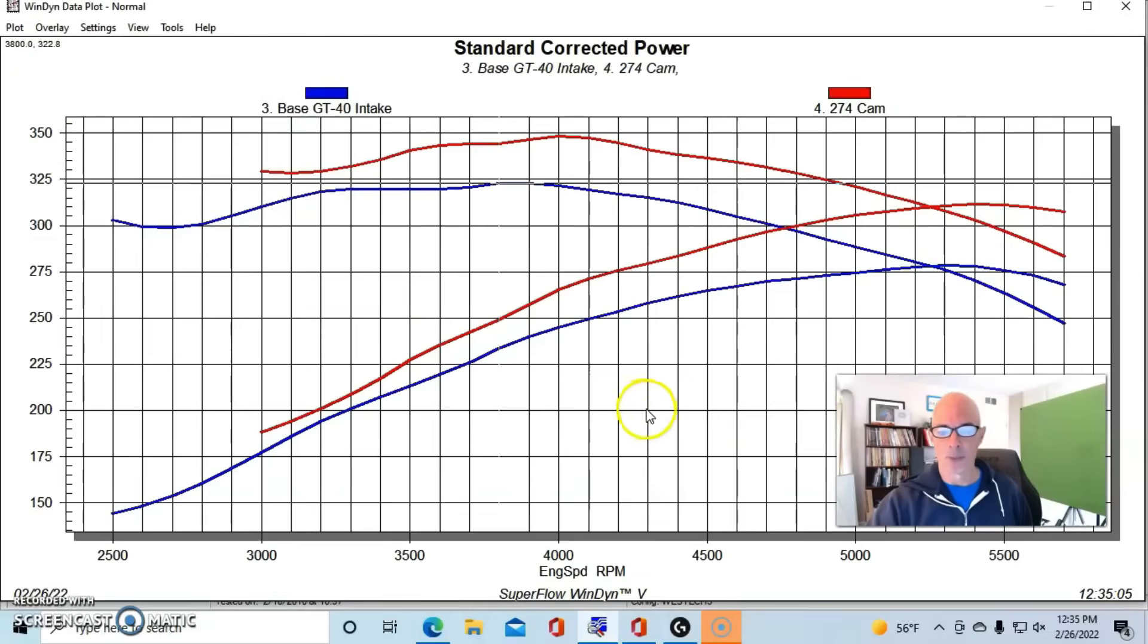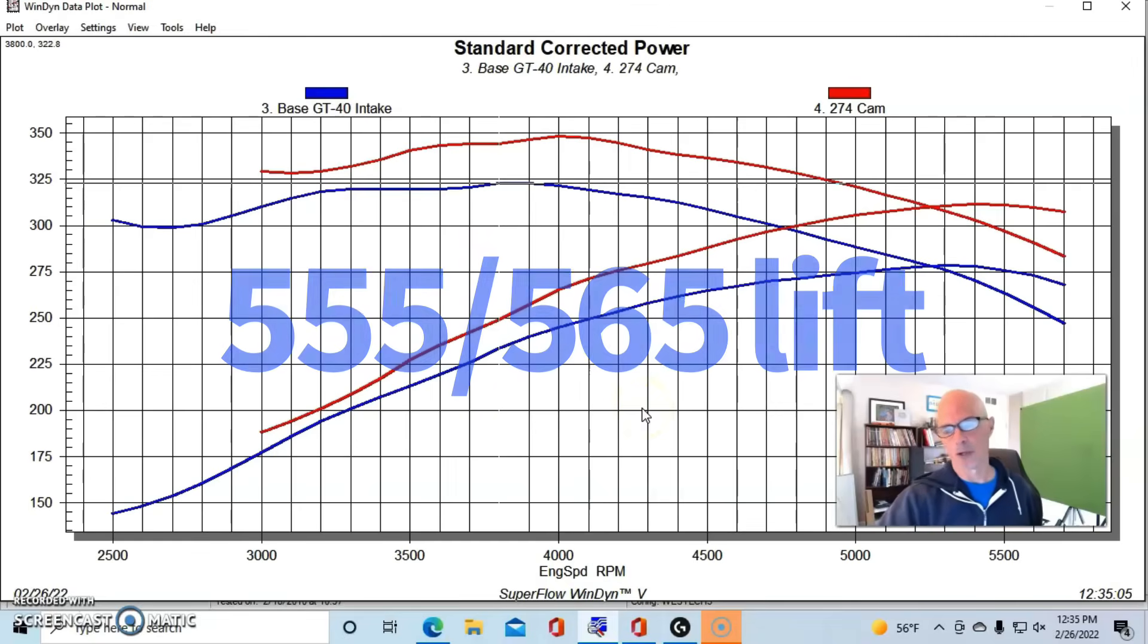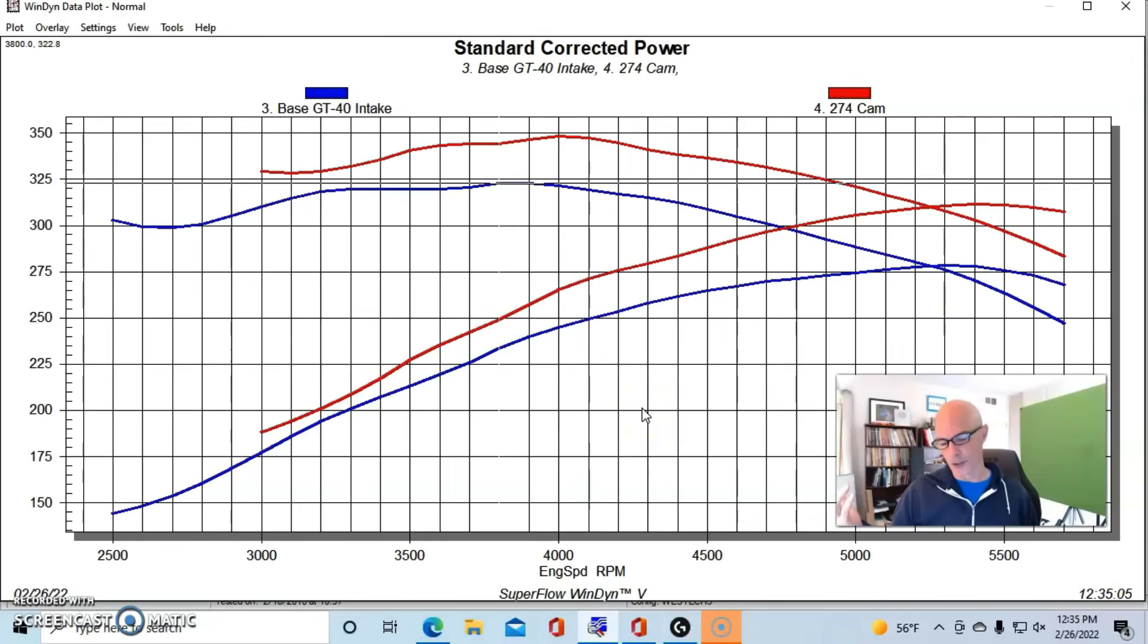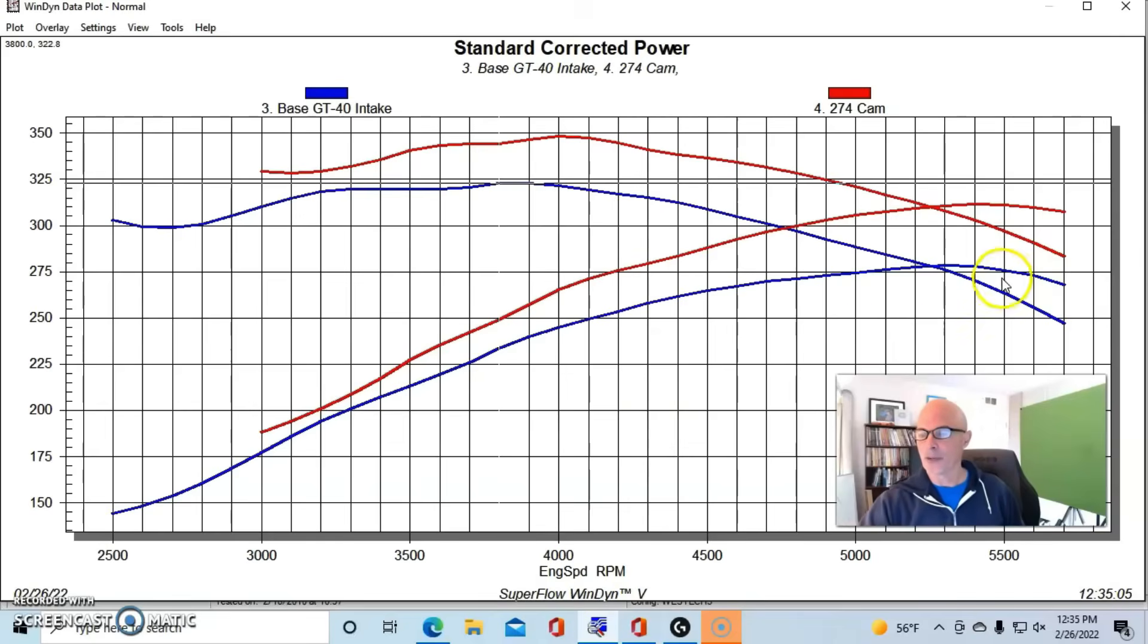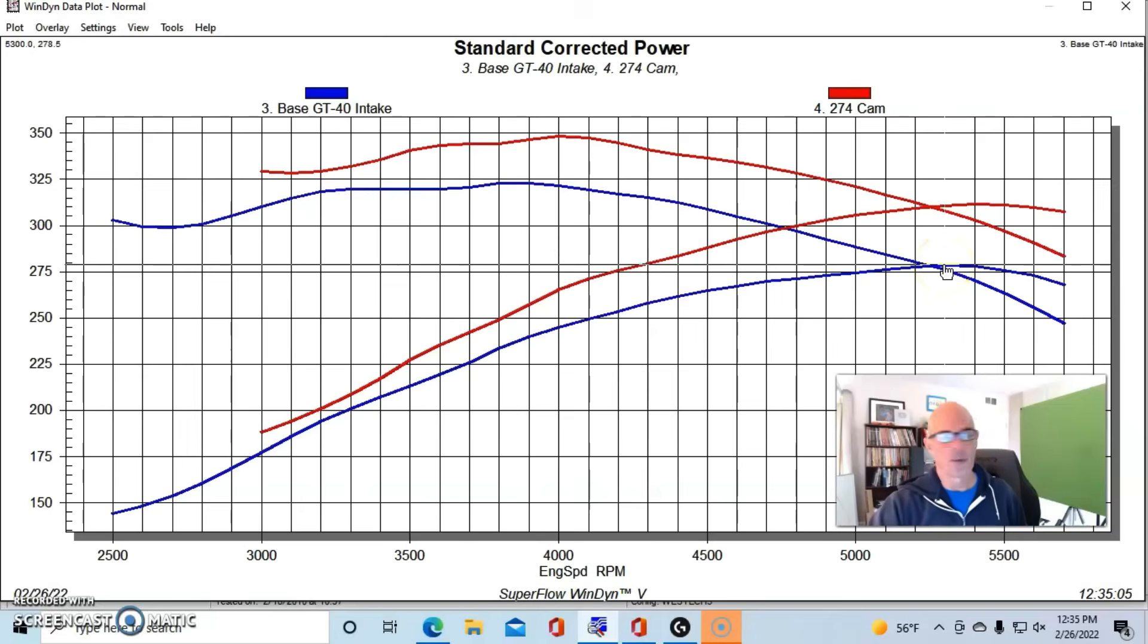So here's what happened when we replaced the factory HO camshaft with the Xtreme Energy 274. It's mid-500s lift, 224/232 at 50 thousandths, and 112 degree lobe separation. That's the camshaft that we'll be using for this combination and also for the slightly wilder combination where we've got even bigger gains.